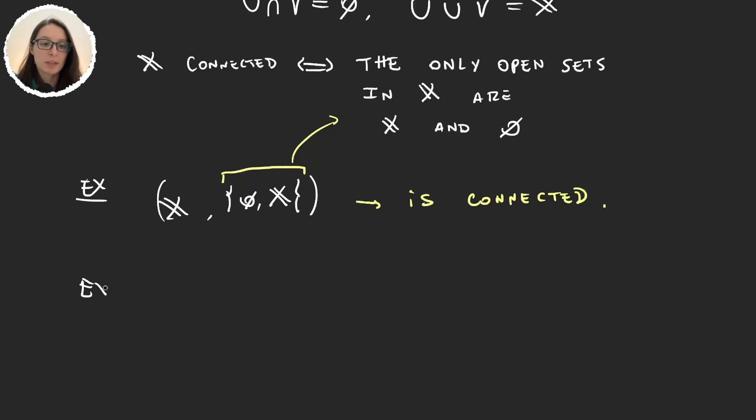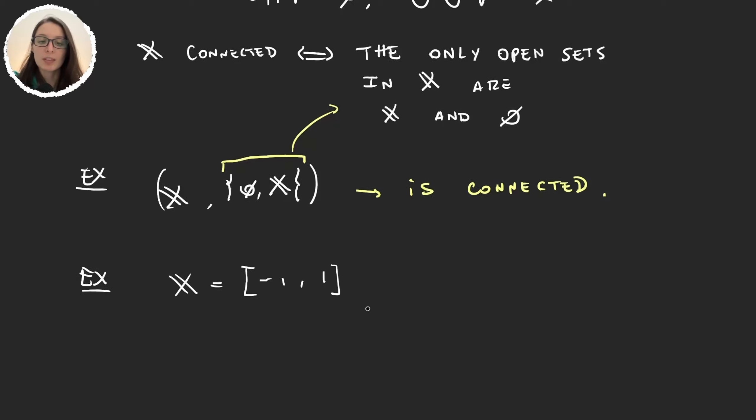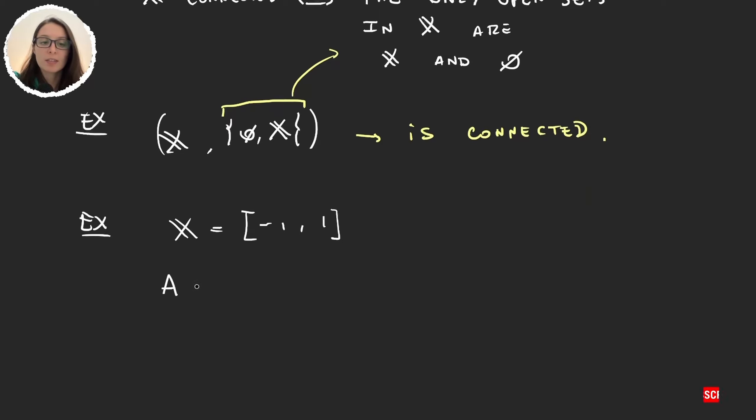Now let's consider the following space. Let's suppose X is the interval [-1,1]. So for this set what I could do is define A to be [-1,0] and B as [0,1]. And then for these two sets what I have is that A intersection B is empty and A union B is X, so it's [-1,1].